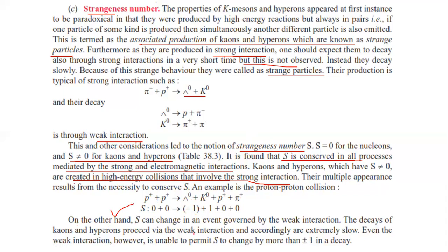On the other hand, S can change in an event governed by the weak interaction. The decay of K-mesons and hyperons proceeds via weak interaction and accordingly is extremely slow. Even in weak interaction, S is unable to change by more than plus or minus 1 in a decay.